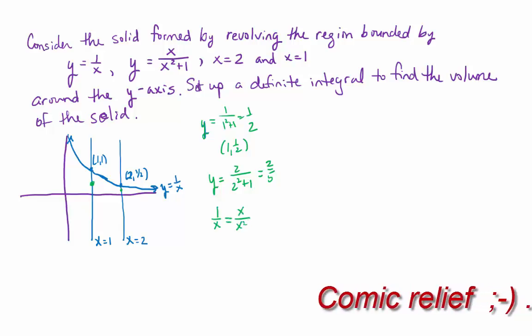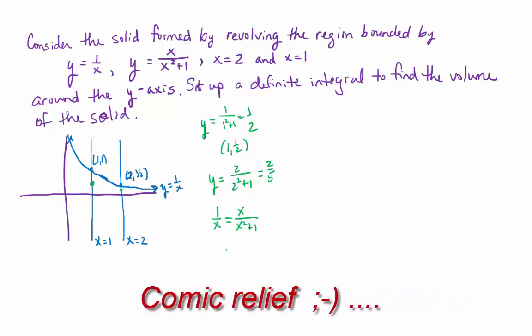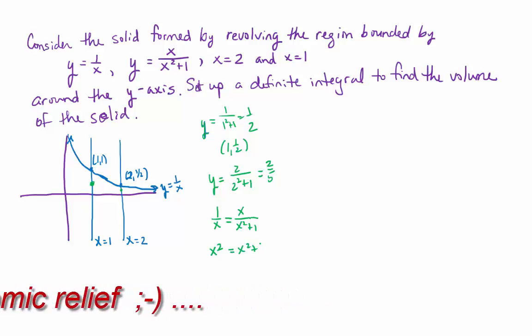1 over x equals x over x squared plus 1. I'm going to use the cross multiplication technique to get x squared equals x squared plus 1, which is a contradiction. 0 does not equal 1. So this may never intersect.